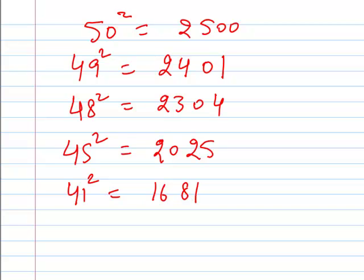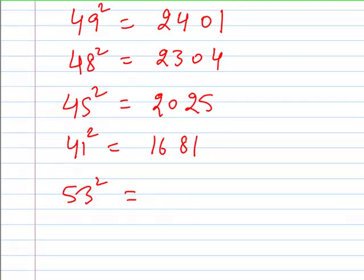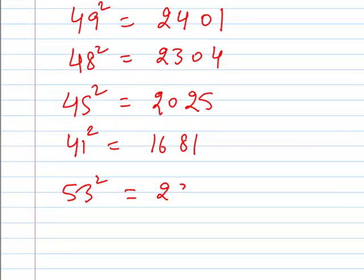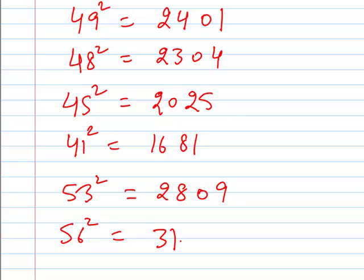Similarly, if you want to do a square of a number above 50, then instead of subtracting, you have to add it. So 53 squared will be 25 plus 3, that is 28, and 09 — giving 2809. Similarly, 56 squared is 25 plus 6, that is 31, and 36 — giving 3136.